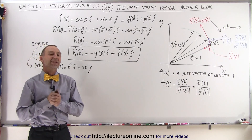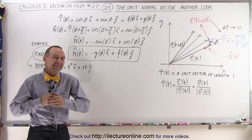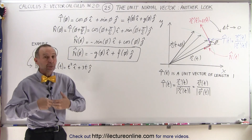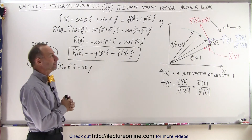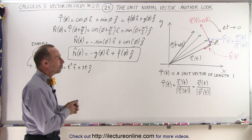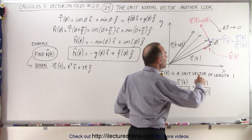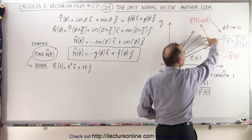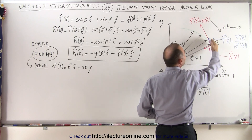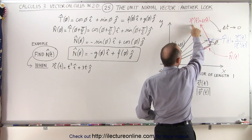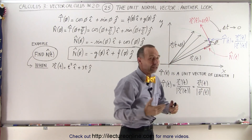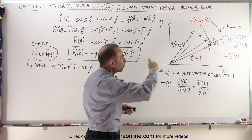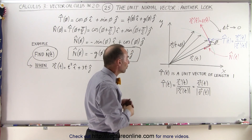Welcome to ElectronLine. Let's take another look at the unit normal vector with an example of how to find it. First, we recognize that the unit tangent vector is a vector of unit length equal to one, in the same direction as the derivative of the position vector, which represents the velocity of a particle if we assume the parametric variable is equal to time.